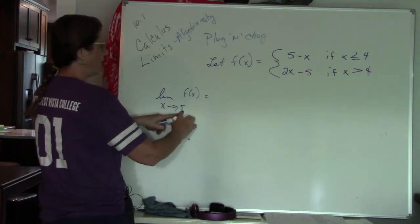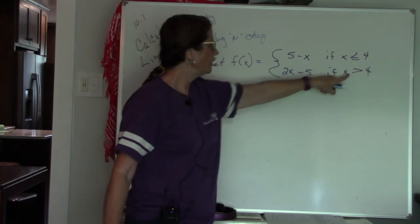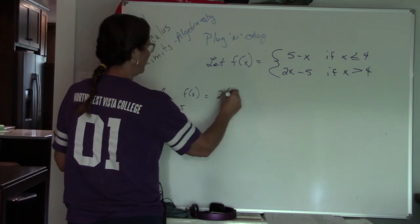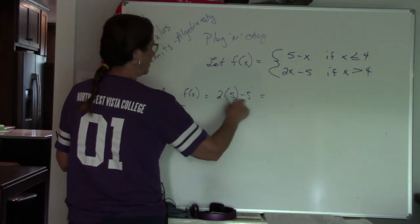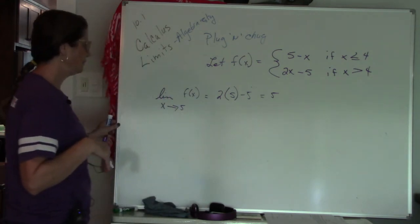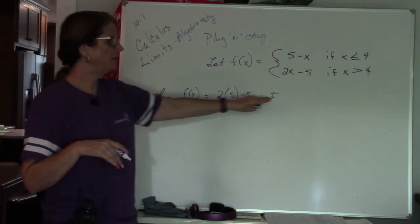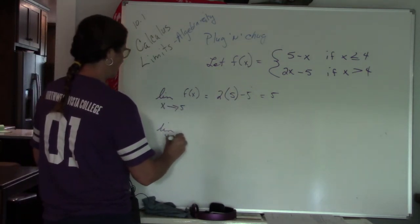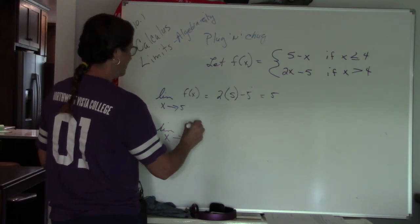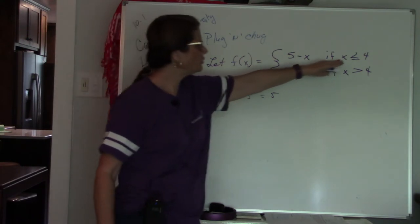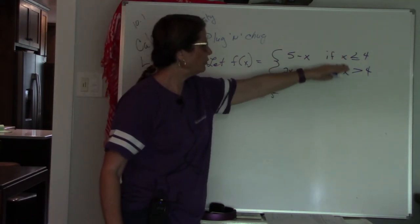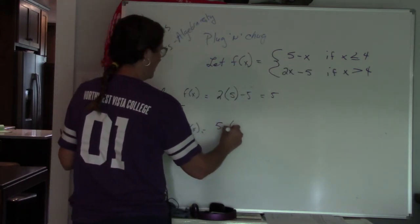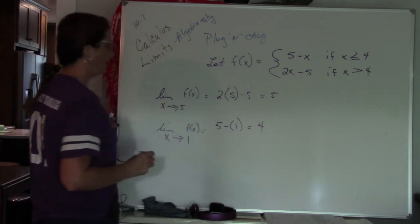So if I had the limit as x approaches 5 of my function. So 5 is greater than 4. So I am using this second function only. So I end up with 2 times 5 minus 5. So 10 minus 5 is 5. So the limit when x is 5 is 5. So my graph approaches 5. If I had the limit of x is approaching 1 of my function. So I have to look up here and go, which one of these would 1 fit in? Well, if 1 is less than 4. So I'm going to use this one. So I end up with 5 minus 1, which is 4. So my function is approaching 4.